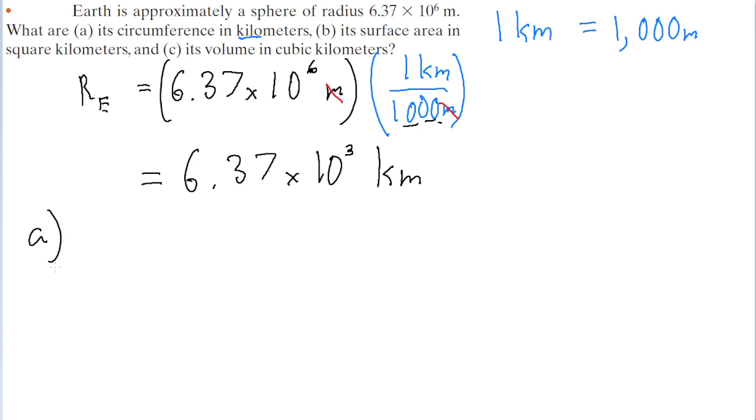For circumference, if we have the circumference of a circle or sphere, the formula is equal to 2 pi multiplied by the radius. So all we need to do is put into a calculator 2 pi multiplied by 6.37 times 10 to the power of 3 kilometers.